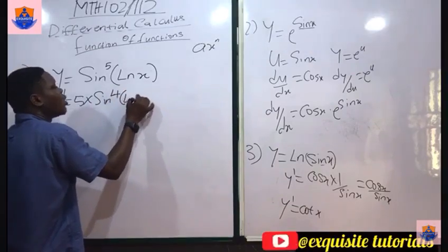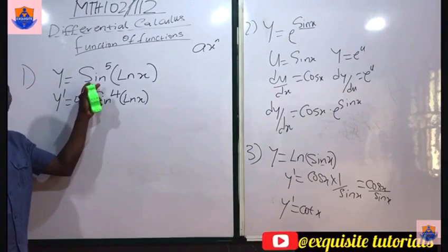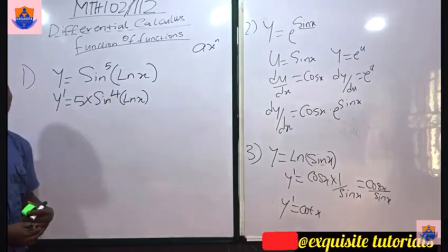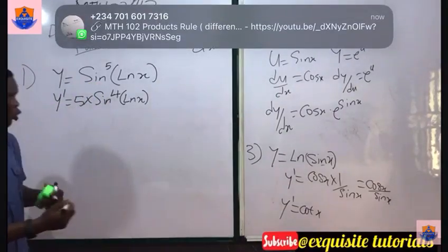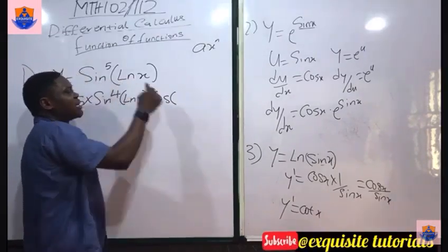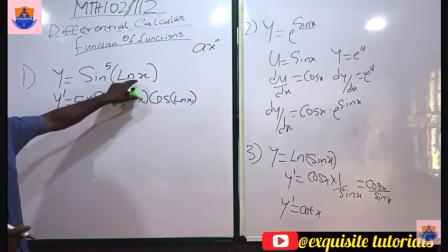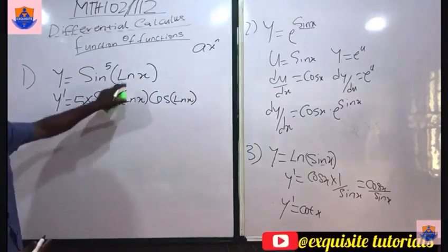But that is not all. When you differentiate your sine function, you are supposed to have cosine. So you have cos, but what is inside this sine of ln x. Don't also forget that this thing inside the function, you have to still differentiate it.